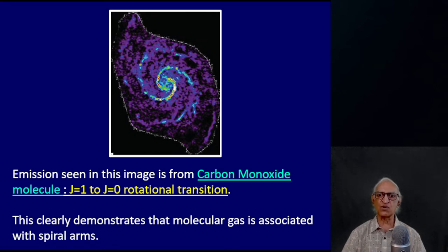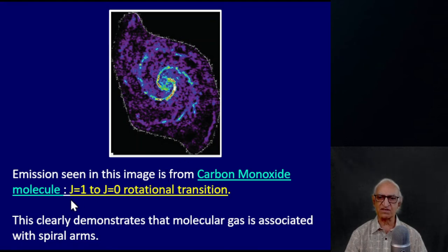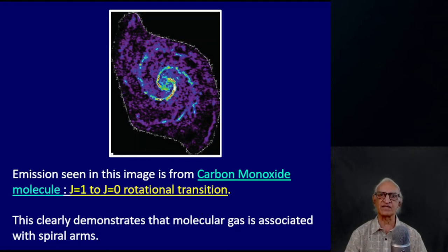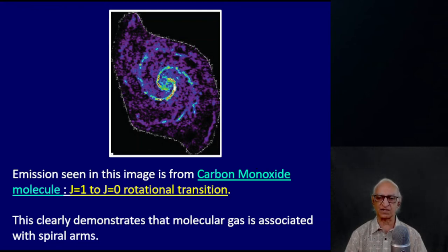Here is carbon monoxide emission from an external galaxy — the emission which arises when the CO molecule jumps from the J=1 rotational level to J=0, emitting radiation at 115 gigahertz or 3 millimeters in wavelength. Quite clearly, this picture demonstrates that giant molecular clouds are also associated with spiral arms.